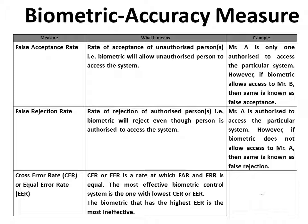Let us take one example. For a particular system, Mr. A is the only authorized person to access the system. If the biometric rejects Mr. A, then it is known as False Rejection Rate. At the same time, if the biometric allows access to Mr. B, then that is known as False Acceptance Rate.